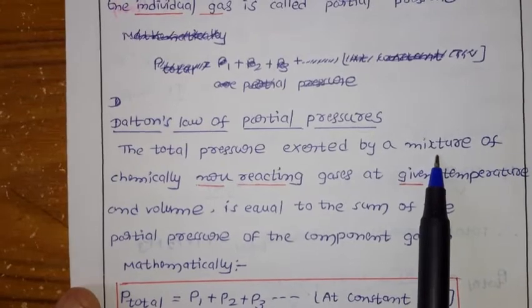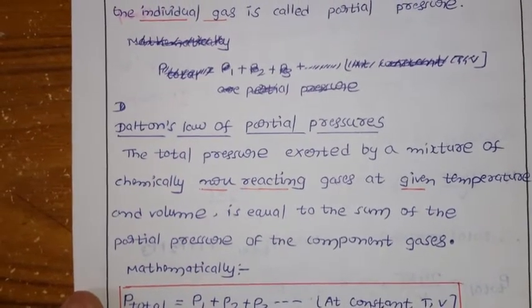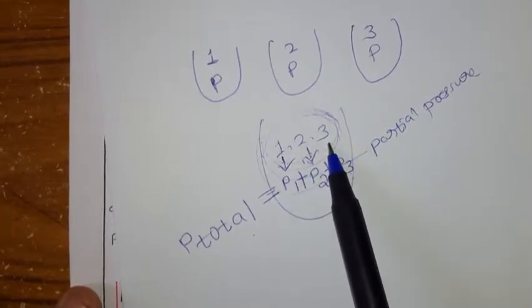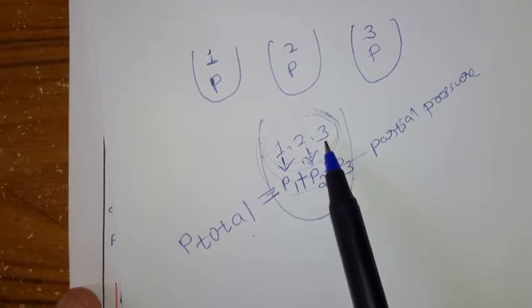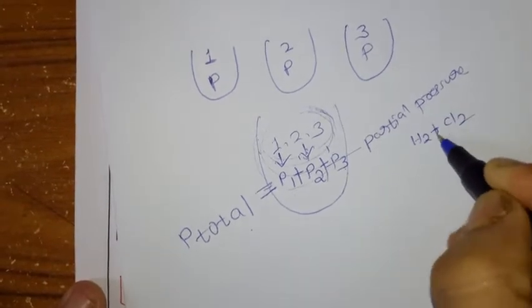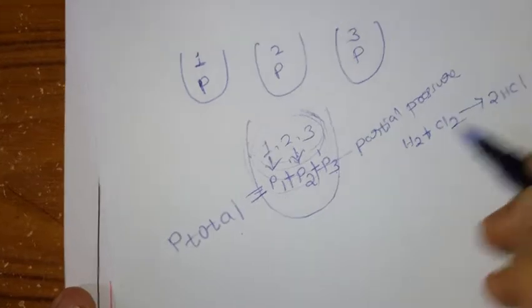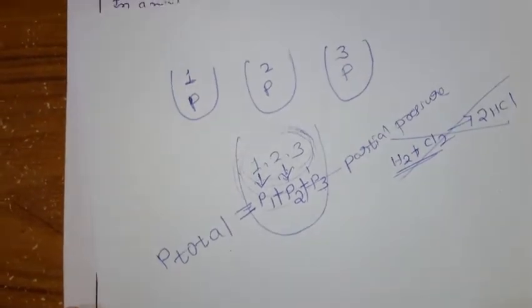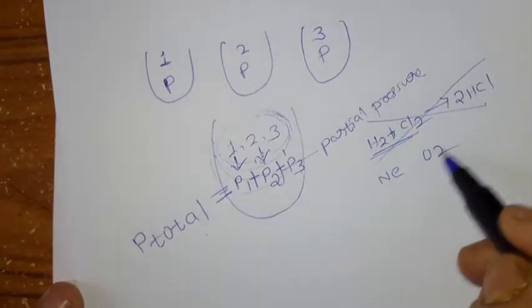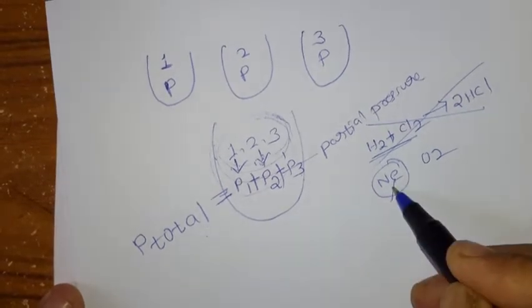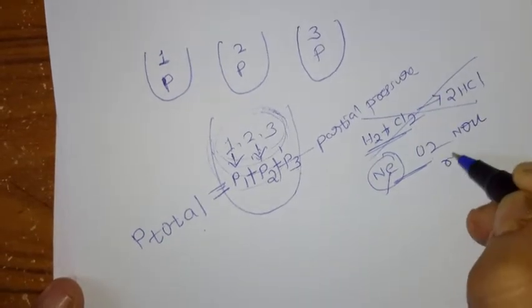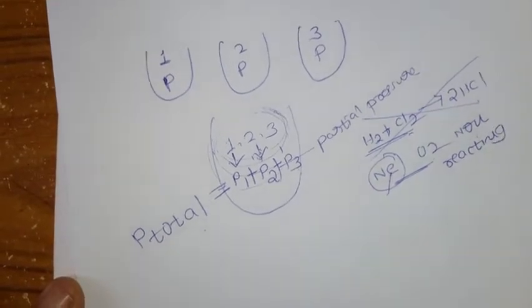We are taking a mixture of gases — they should be chemically non-reacting. For example, if I take H₂ and Cl₂, at high pressure they react and give HCl, so these are reacting gases — we should not take them. We should take non-reacting gases. For example, Neon and Oxygen: Neon is a noble gas, it is not going to react with Oxygen. So we must take non-reacting gases.